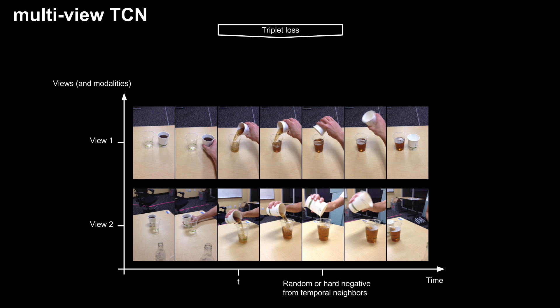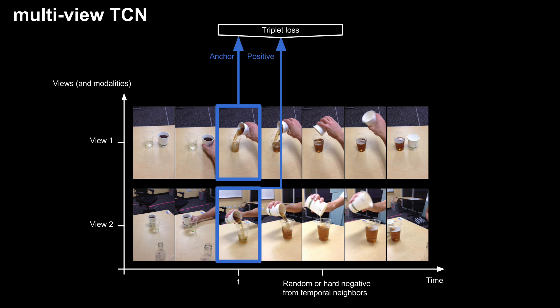Our model uses a triplet loss trained on multi-viewpoint observation. Co-occurring frames from multiple viewpoints are attracted to each other in the embedding space, while visually similar frames from nearby time steps in the same video are pulled apart. This encourages the embedding to be invariant to viewpoint, but sensitive to semantic cues that are indicative of time, such as whether liquid is pouring into a cup.